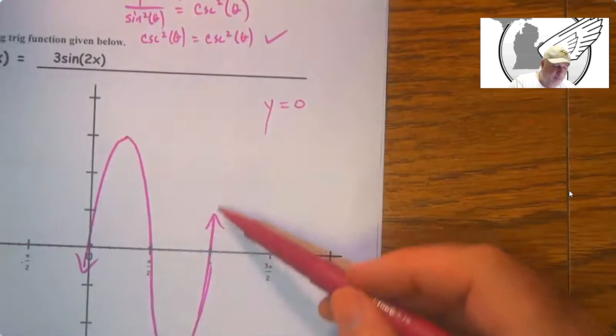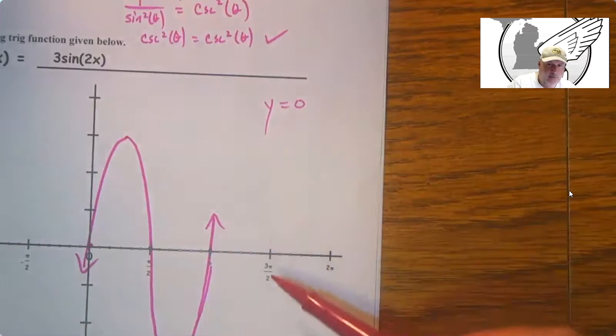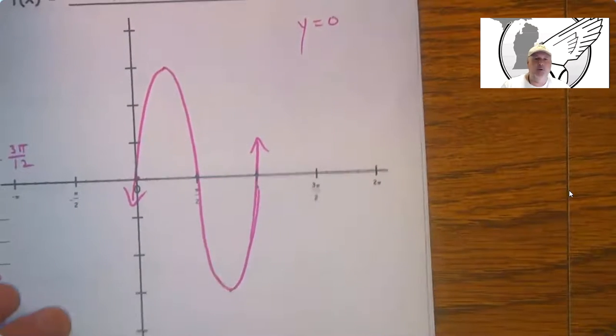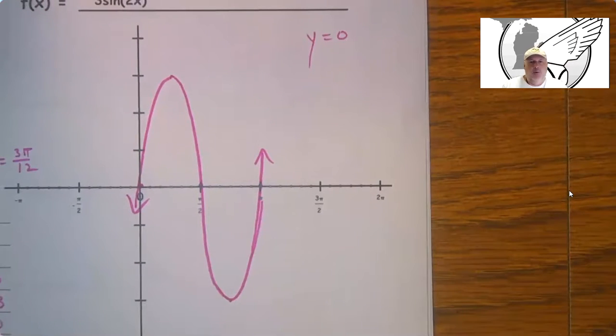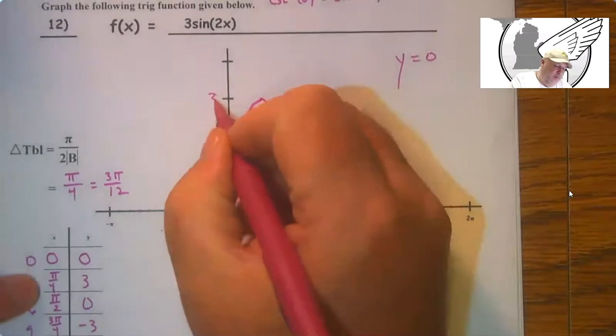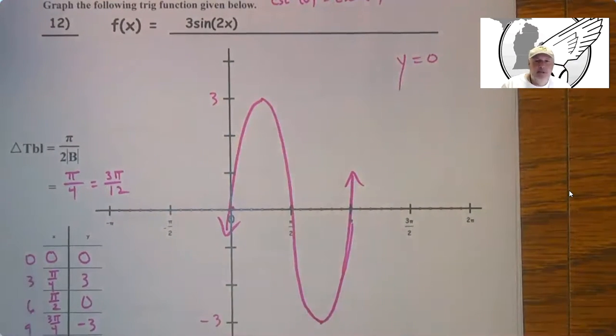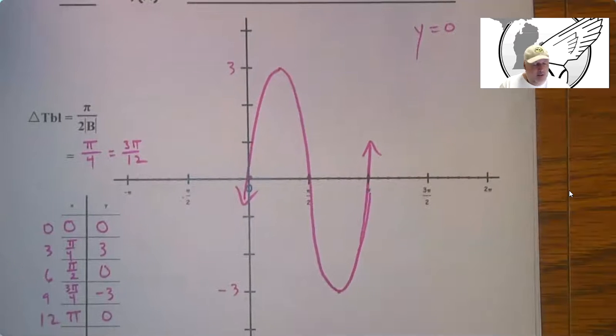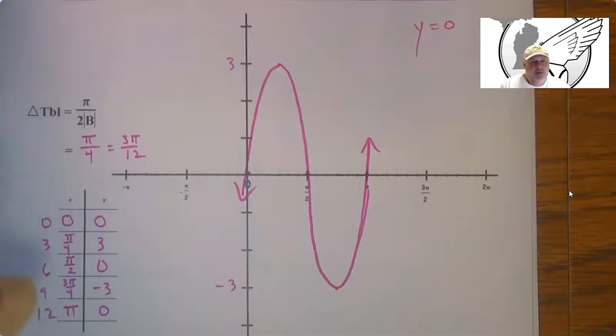And so if we kept going, then I'd be curving down and so on and so forth over and over and over. So that's just one period of that graph. And this is 3 and negative 3. That's pretty simple.